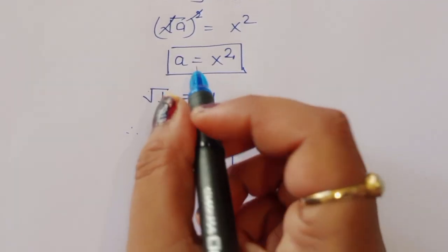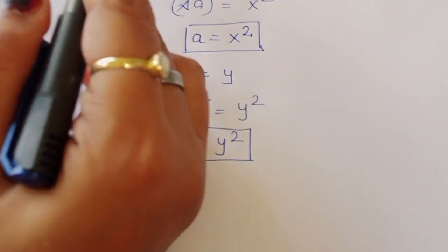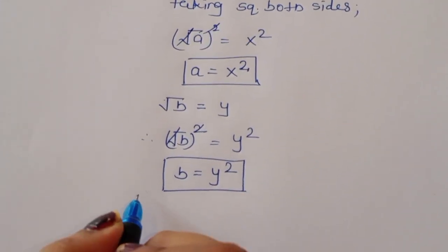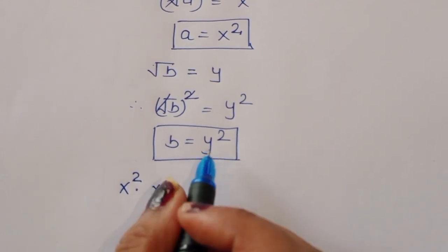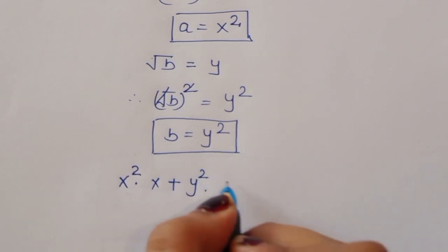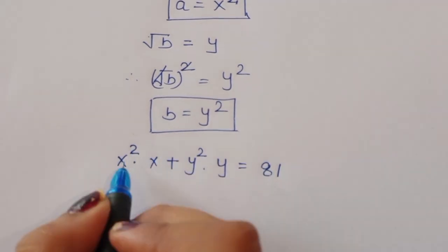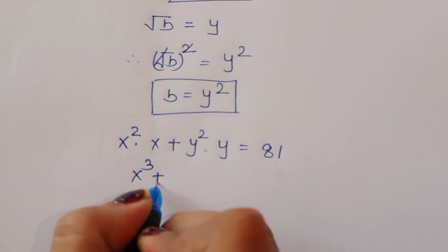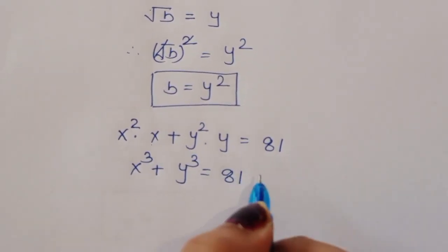Now substitute these values into equation 1. Since a = x² and √a = x, we get x²·x, and since b = y² and √b = y, we get y²·y, which gives x³ + y³ = 81. This is equation 1.